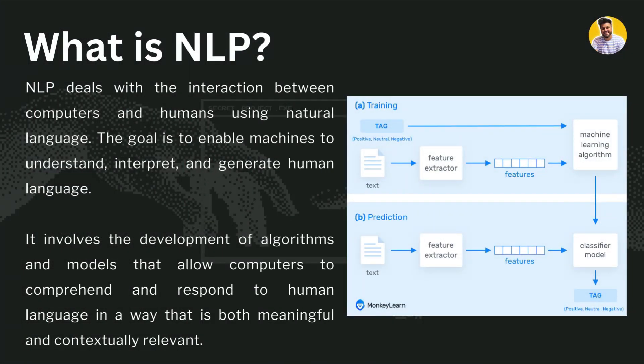So, what is NLP? NLP is a part of machine learning or artificial intelligence that helps with the interaction between computers and humans in natural language. Our computer systems only understand binary language, so NLP helps computers understand natural languages like English, Hindi, French, and others. The goal of NLP is to enable machines to understand, interpret, and generate human language in a way that is meaningful, contextually and grammatically correct.